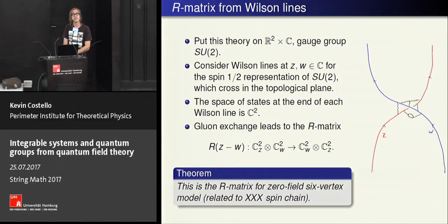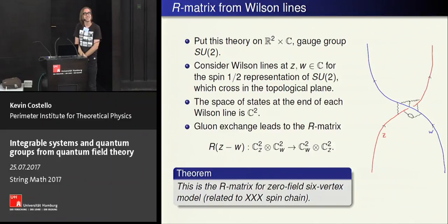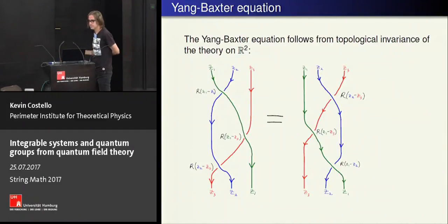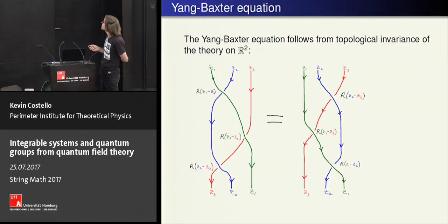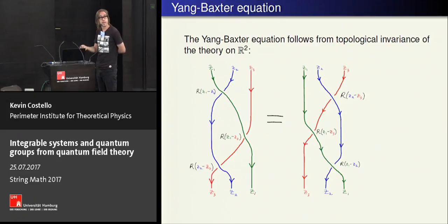Absolutely — this is a good point. If you write down the Feynman diagrams, there's a two-loop anomaly that appears which explains this fact. It took us a very long time to figure this out. The fact that the theory is topological means that the Yang-Baxter equation just holds for obvious reasons, just like it does in Chern-Simons theory.